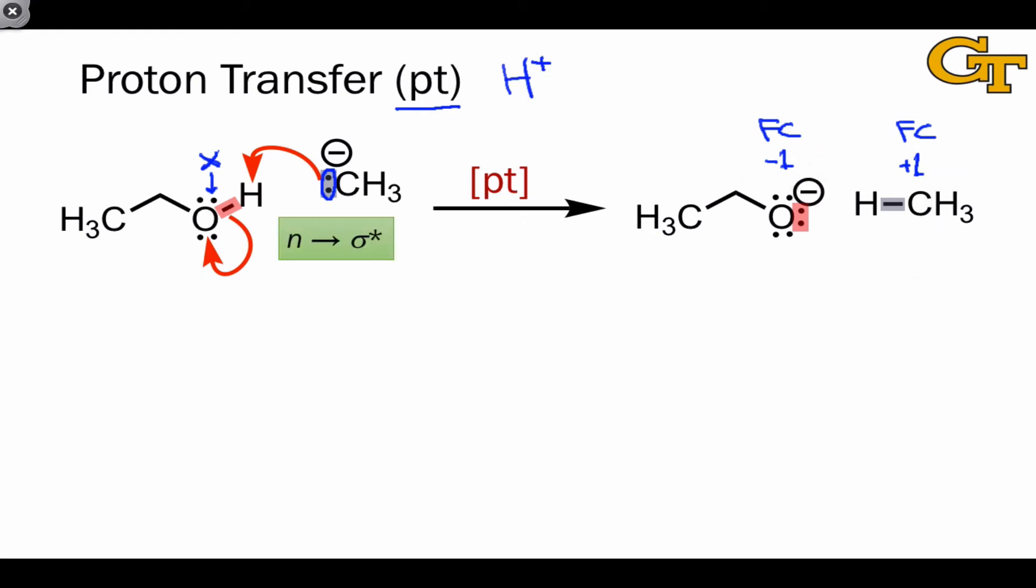Using our scheme for labeling electron flows, we can think about this as n to σ* electron flow: n for the non-bonding lone pair, and σ* because a sigma bond is broken as a result of donation of the lone pair.